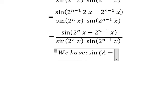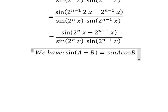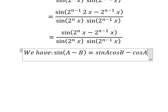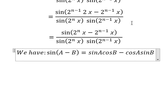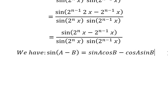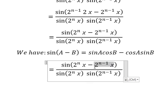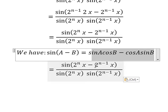Sine A minus B equals sine A cosine B minus cosine A sine B. Now we need to transform this one into this one.